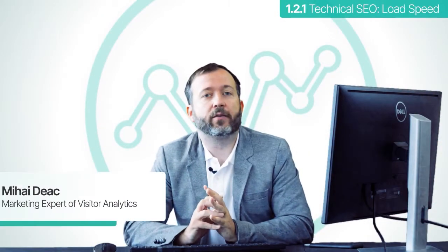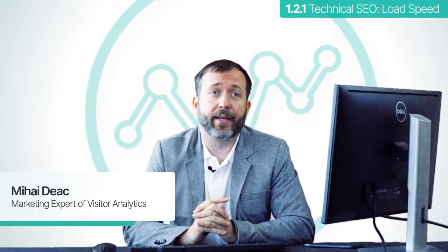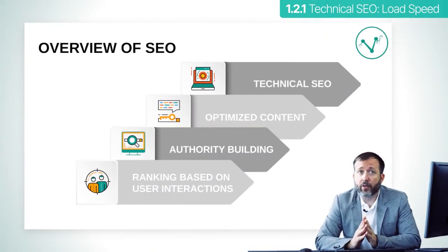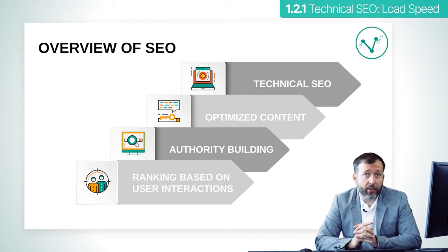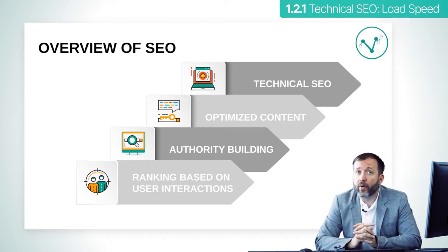Welcome back to the visitor analytics course about web analytics and SEO. Before we begin, we can split the subject of SEO into four main branches: technical SEO, which includes all aspects of website functionality; optimized content, which refers to texts, meta texts, and other similar things related to content in general; authority building for the website; and rankings based on user interaction signals.